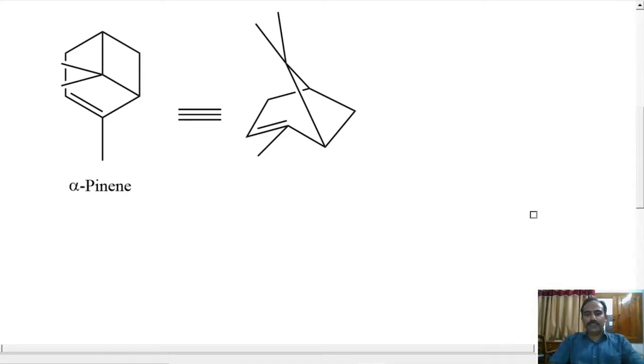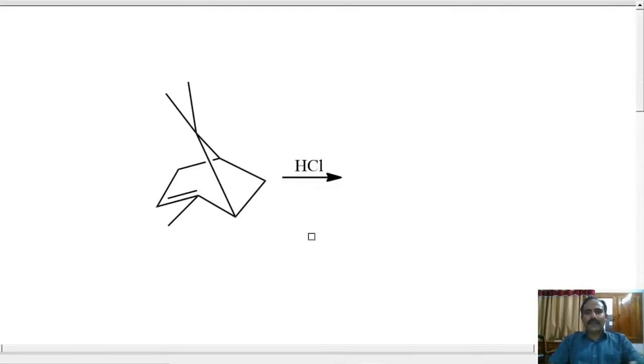First step of the synthesis is to make bornyl chloride from alpha-pinene. For that, we use dry HCl. What could happen here?